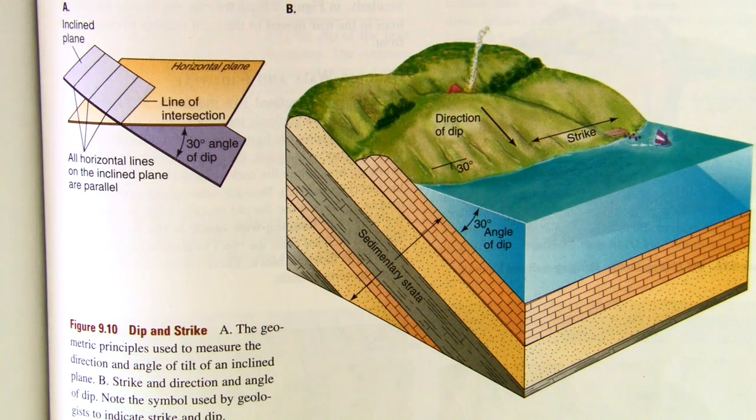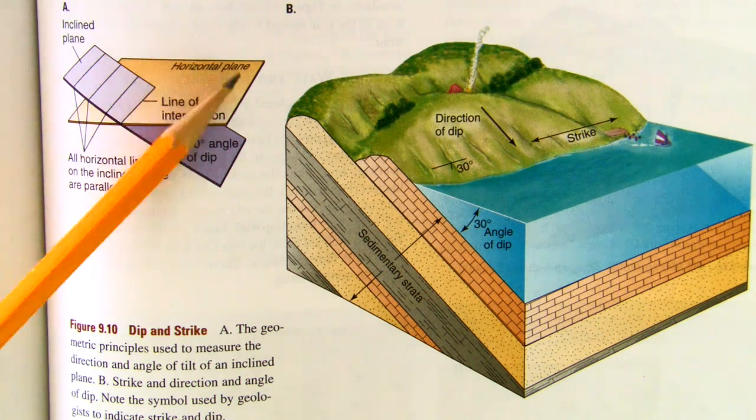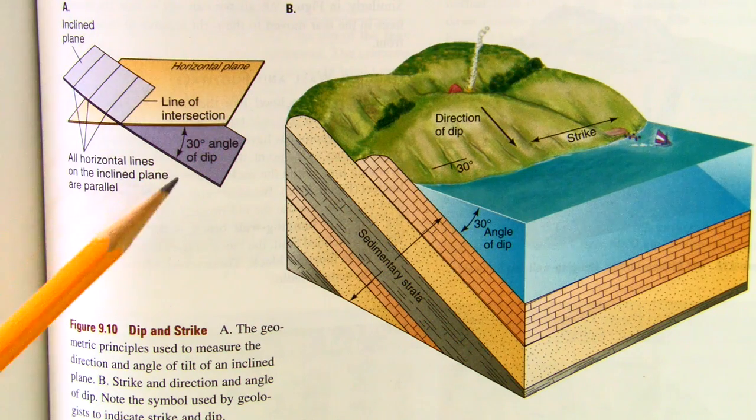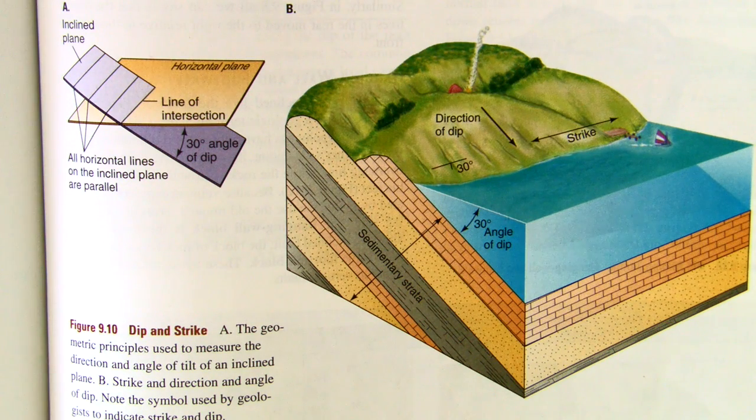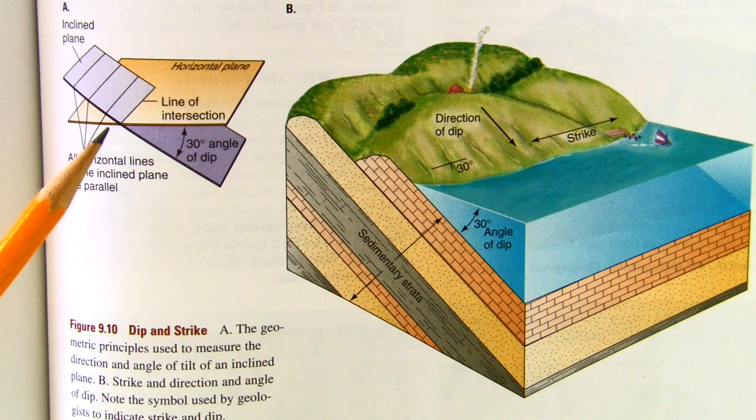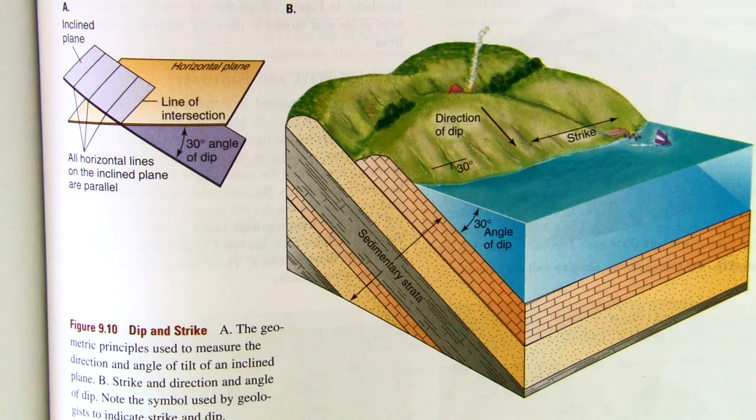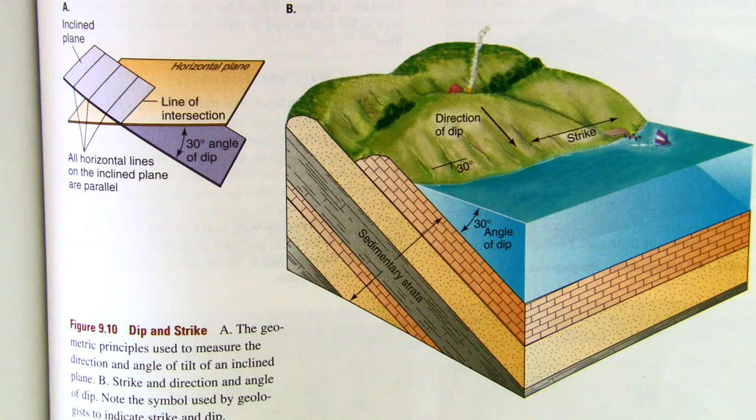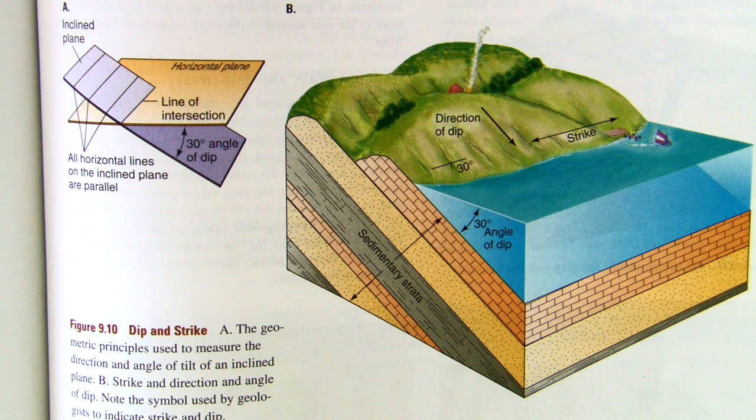So when we talk about two planes, here's plane one and here's another plane, where they intersect creates a line. Remember from high school geometry, the intersection of two planes is a straight line.